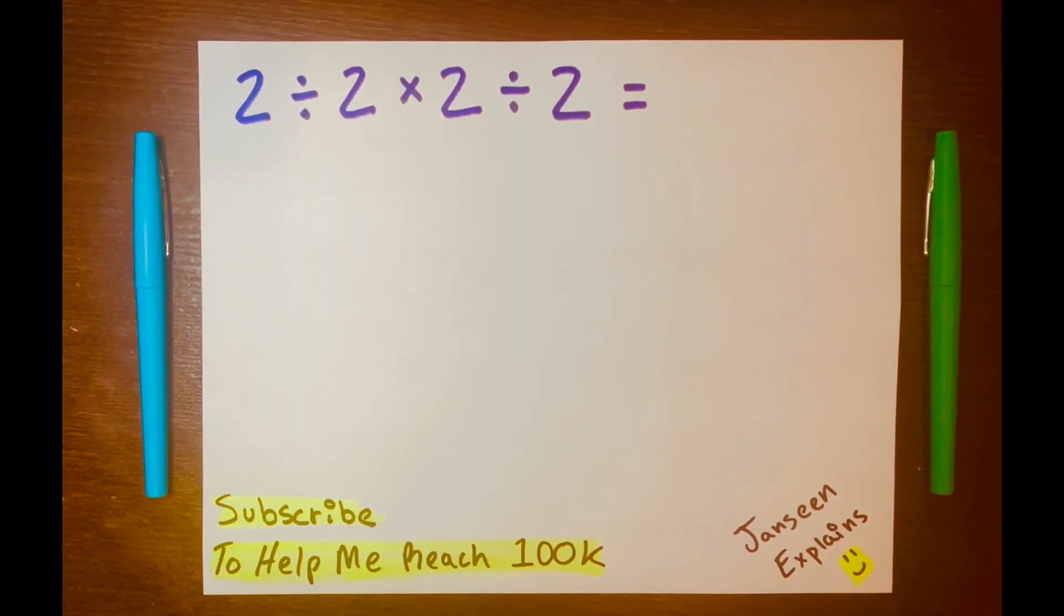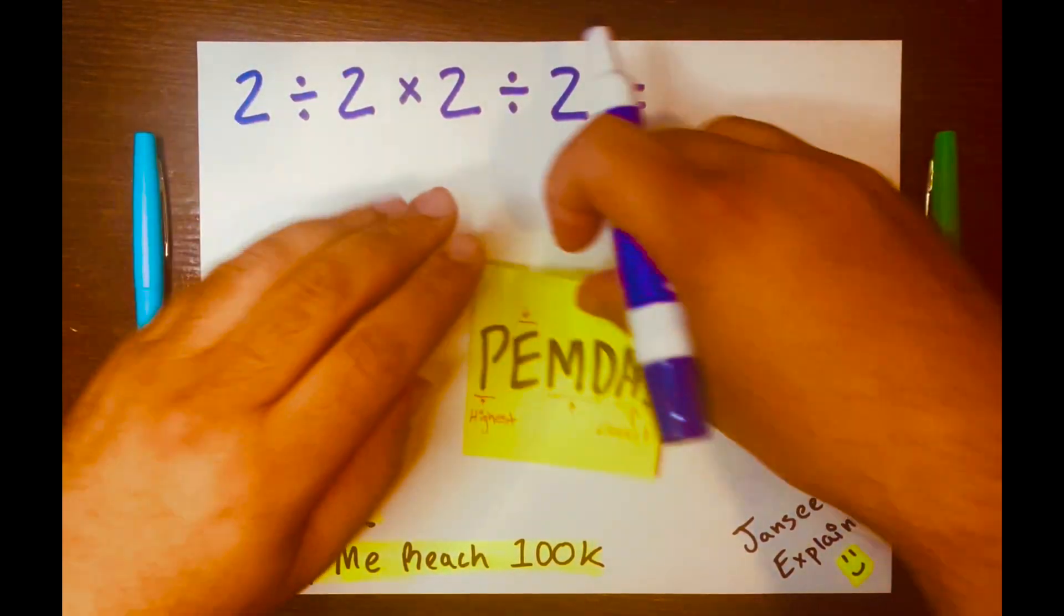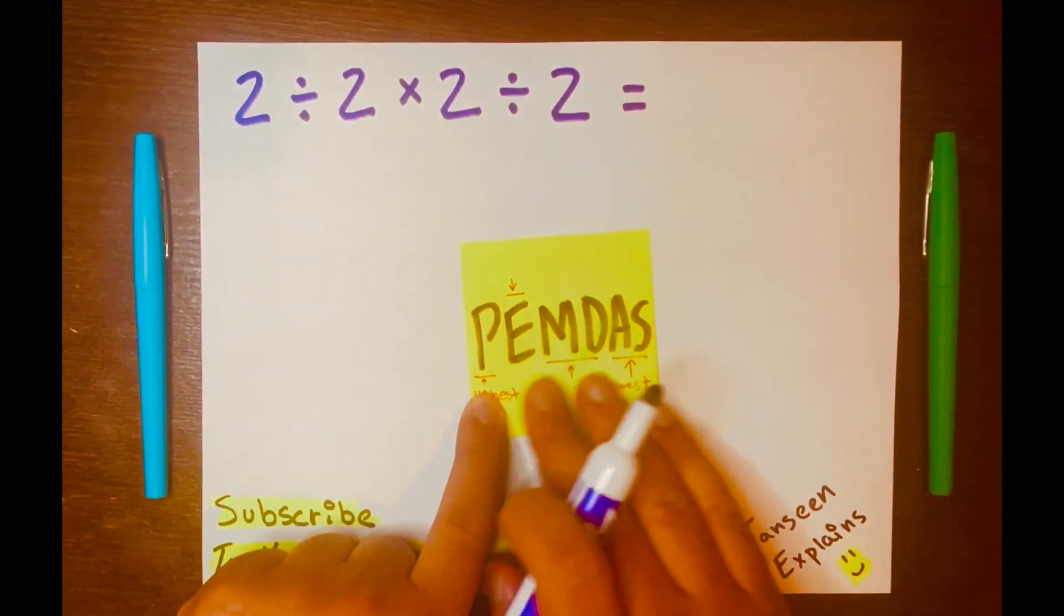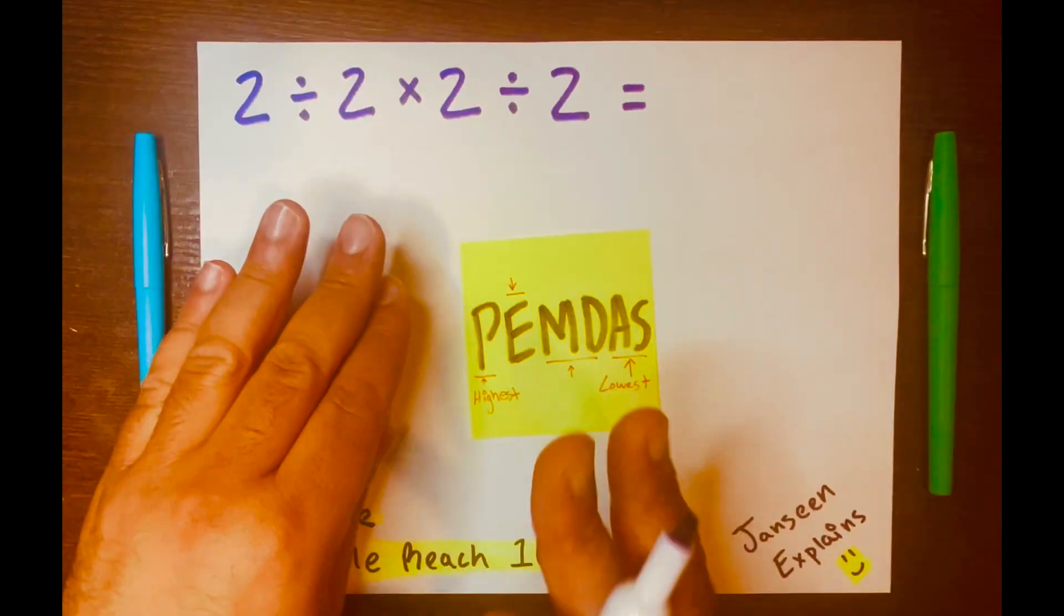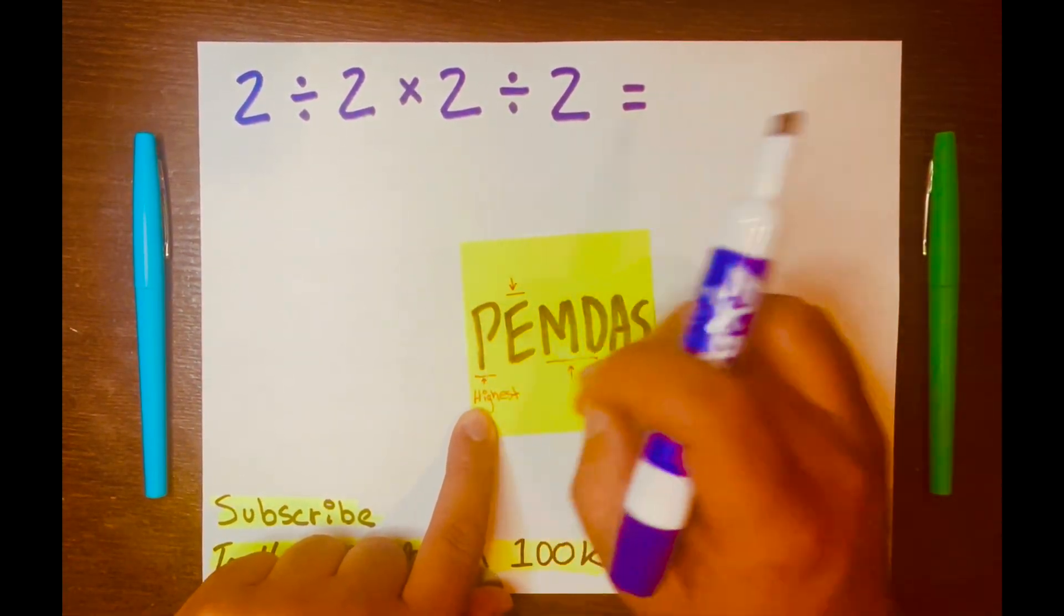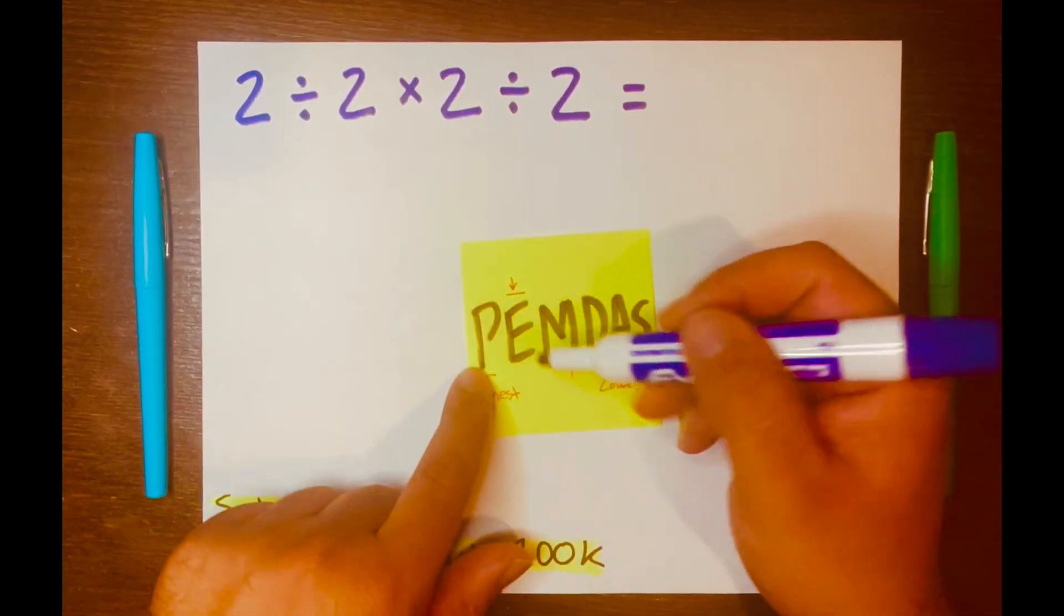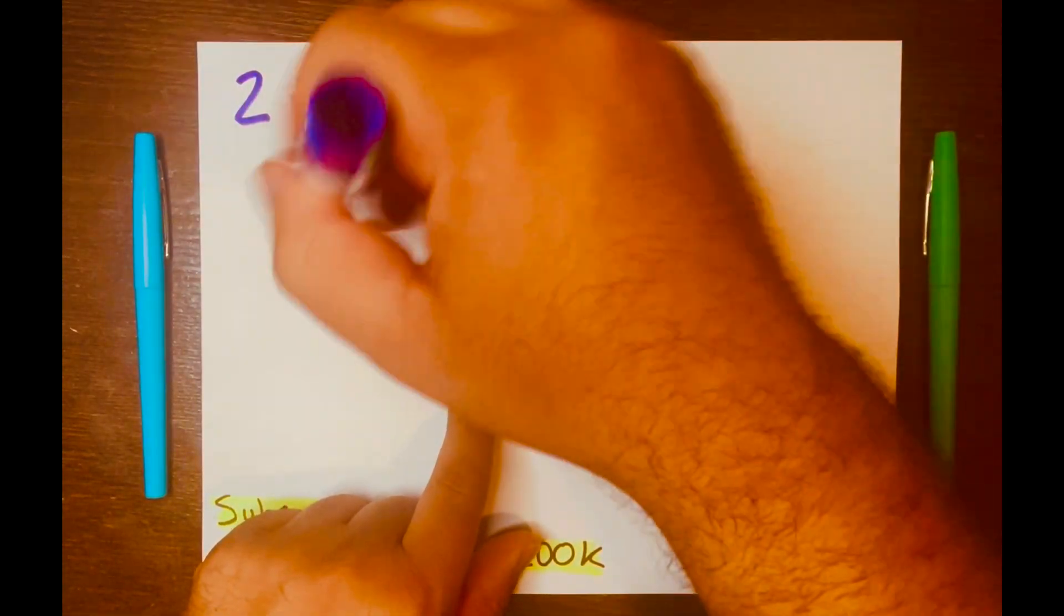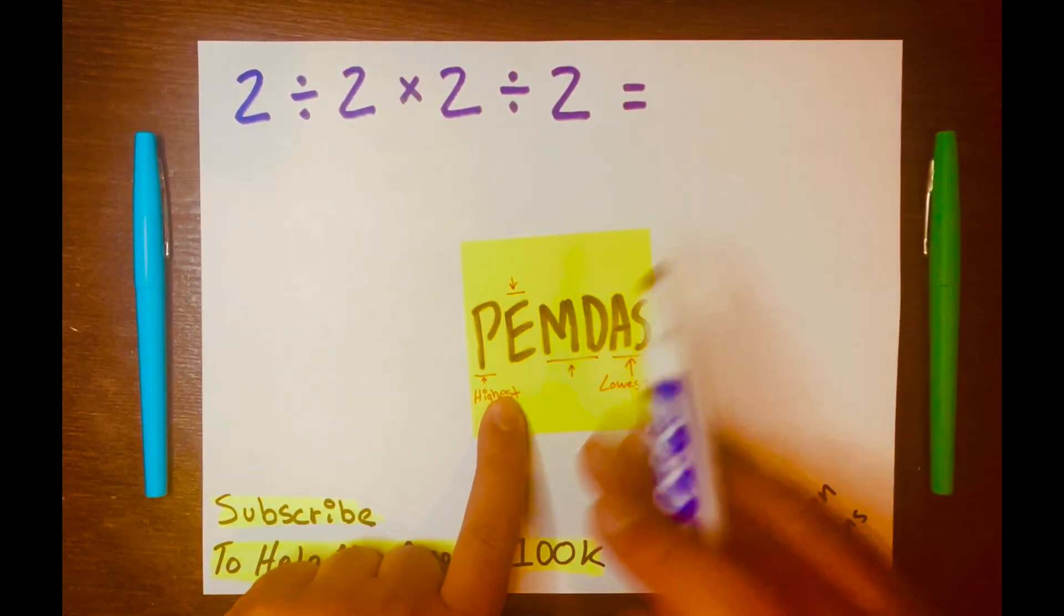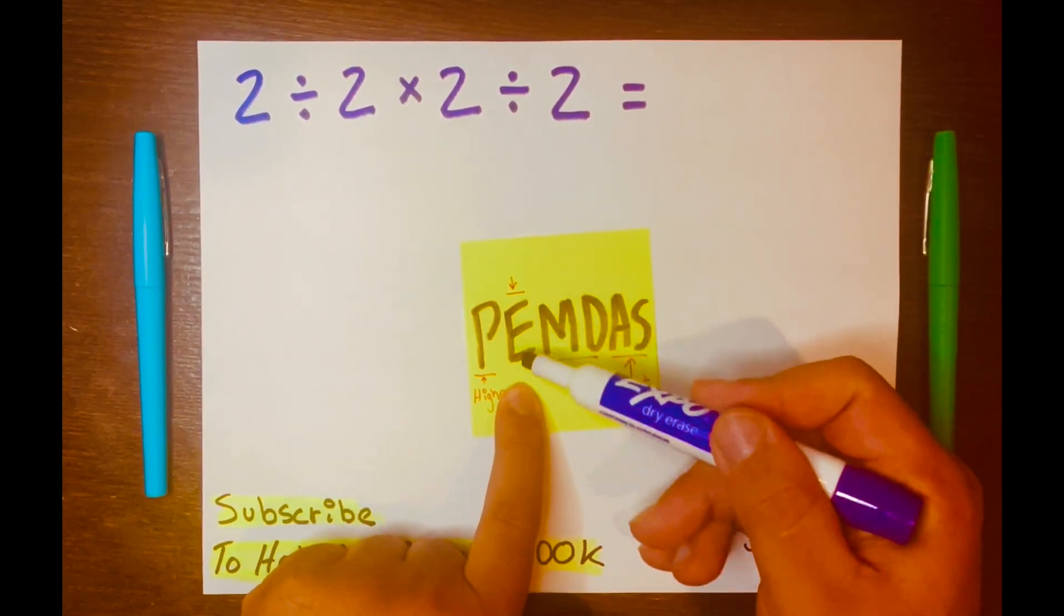When you see a math problem like this, you want to think of PEMDAS. PEMDAS is just an acronym to help us remember the order of operations in math. And P will be the highest level, which stands for parentheses. Then you move on to the next one, exponents.